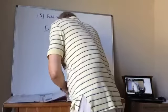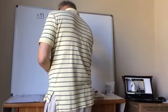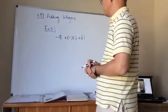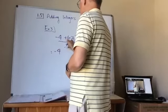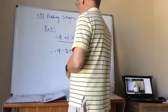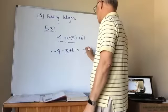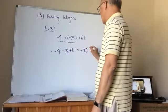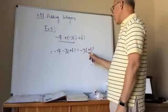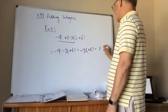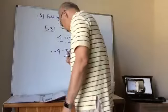Example 3: Find the sum of negative 4 plus negative 72 plus 61. First, handle negative 4 plus negative 72: same sign, add to get 76, common sign is negative. Now negative 76 plus 61: different signs, subtract to get 15. The larger number, 76, is negative, so the answer is negative 15.